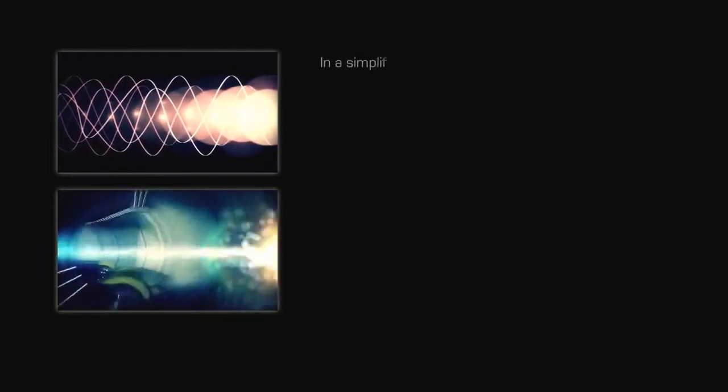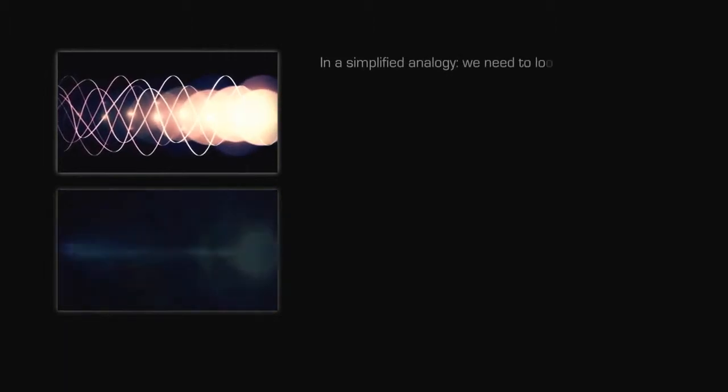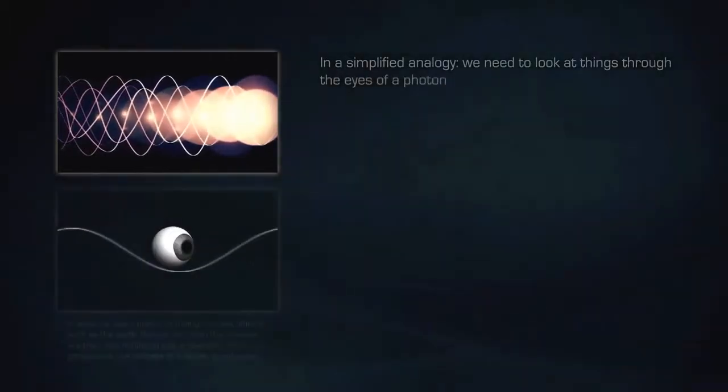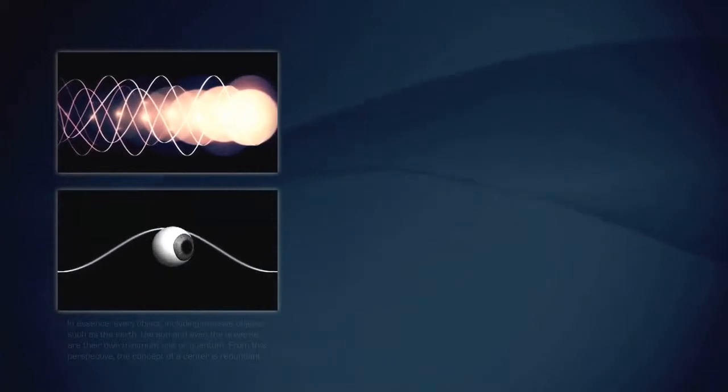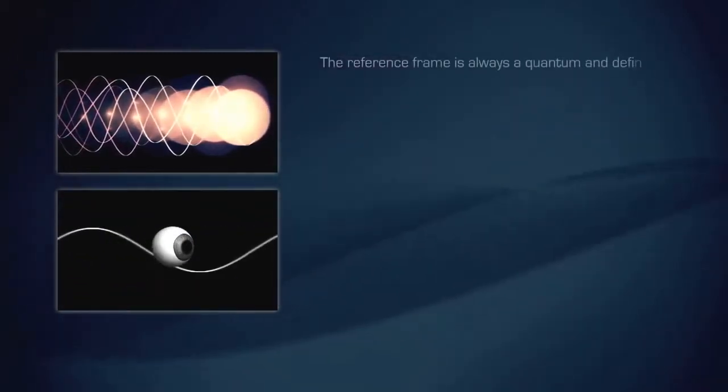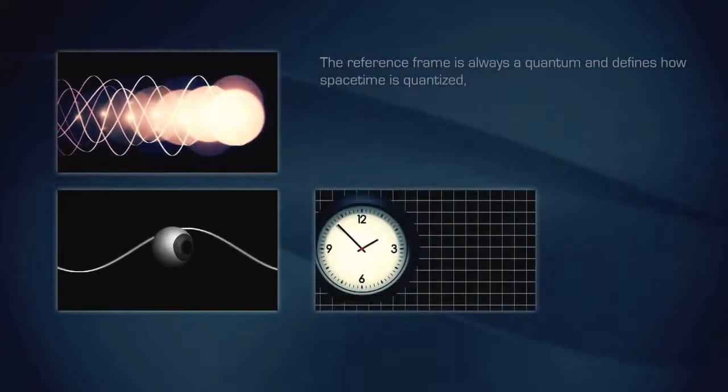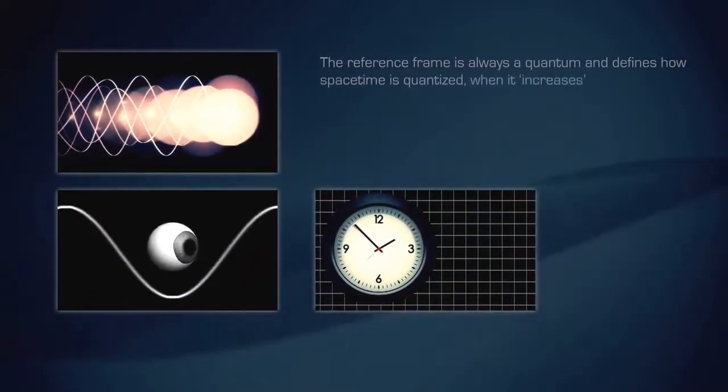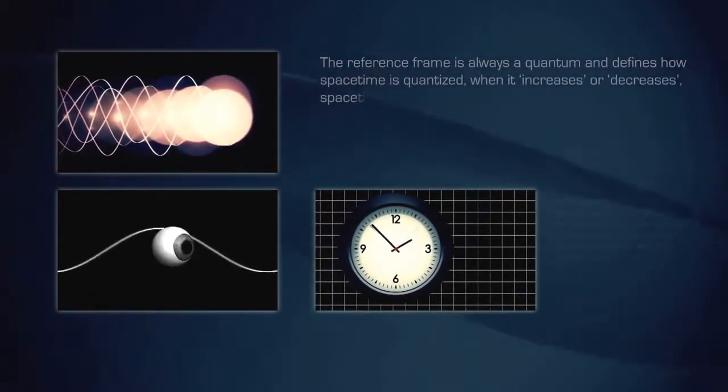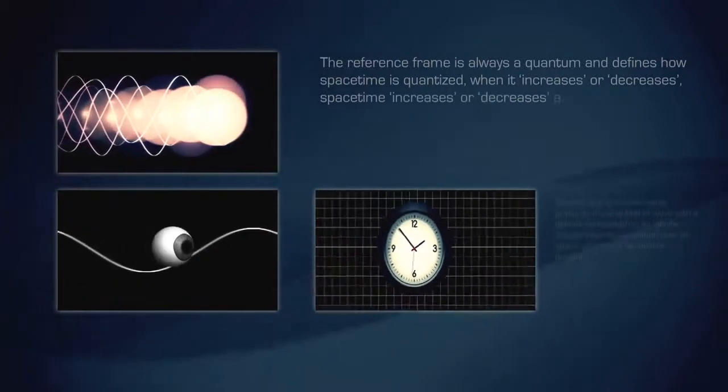In a simplified analogy, we need to look at things through the eyes of a photon. The reference frame is always a quantum and defines how spacetime is quantized. When it increases or decreases, spacetime increases or decreases as well.